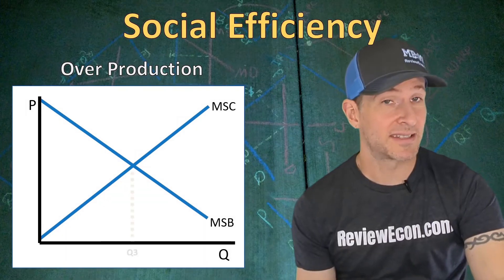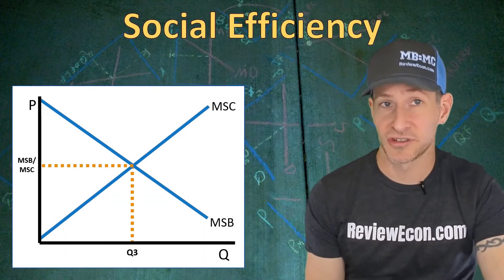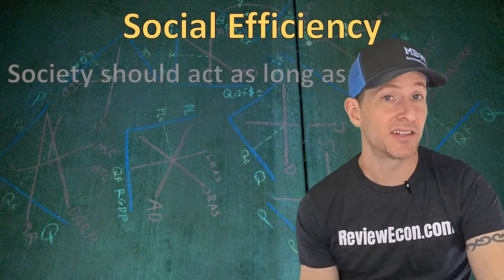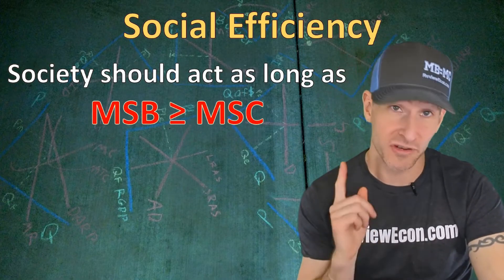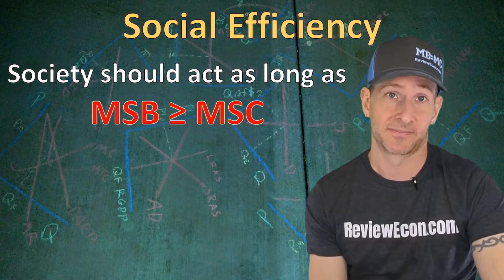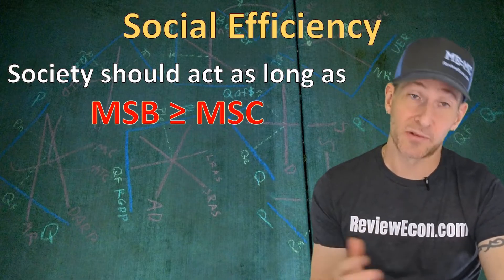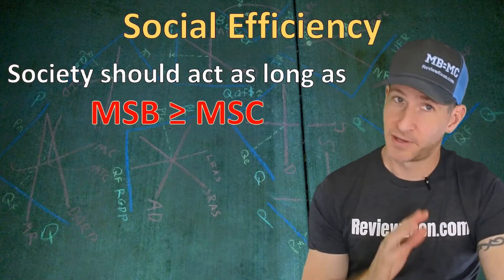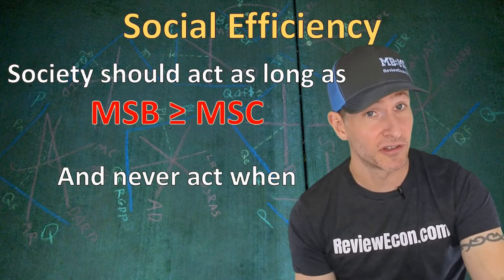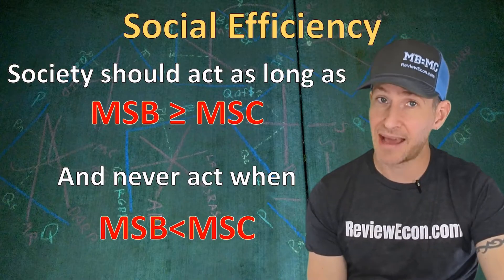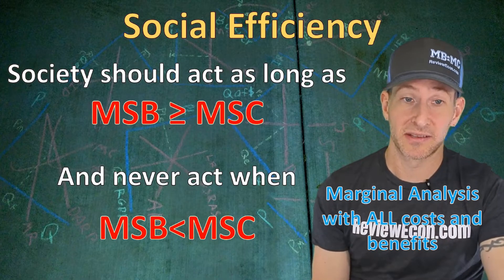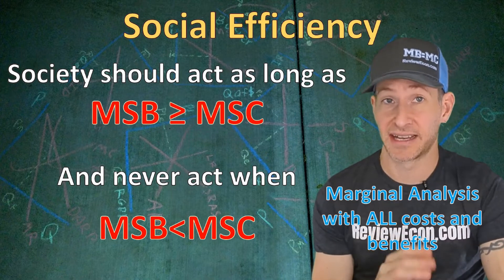It is at the intersection of those two curves where we see marginal social benefit equaling marginal social cost, and that's where we see the socially optimal outcome. Just like we've learned with individuals, society should act as long as the marginal social benefit is greater than or equal to the marginal social cost. The best place to be is where marginal social cost equals marginal social benefit, but you keep acting as long as the marginal social benefit is greater than the marginal social cost. Society should never act when the marginal social benefit is less than the marginal social cost, because that makes us less efficient. This is just another variation of the marginal analysis you've already learned — here we're just looking at all costs and all benefits for society as a whole.